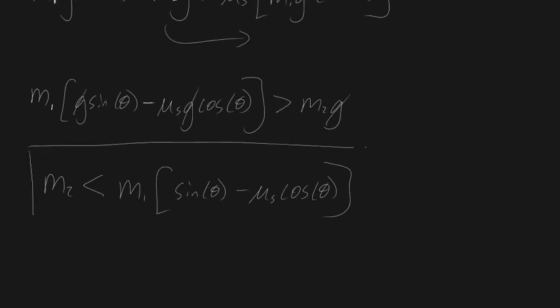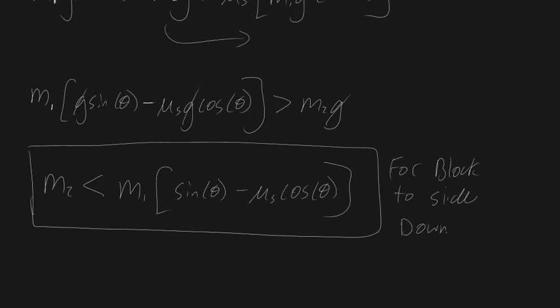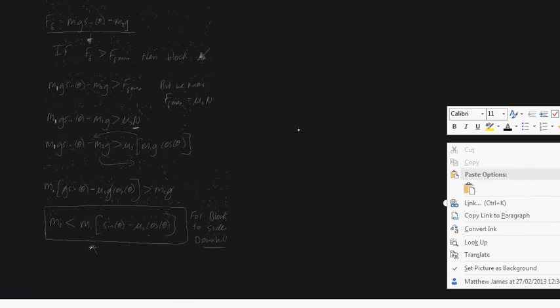This is our answer — the inequality that must be true for the block to slide down the hill. Notice it meets your intuition as well: if you increase mass m1, the object is more likely to slide downhill, demonstrated through this formula since m2 needs to be smaller when m1 is larger. This is actually a longer way than required to solve such a problem, but when you get into it you can take shortcuts, like substituting μs × N as the friction force right from the start. Nonetheless, this is a great way to introduce this particular problem.